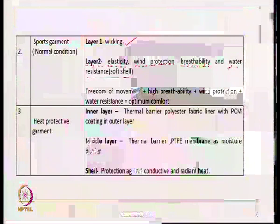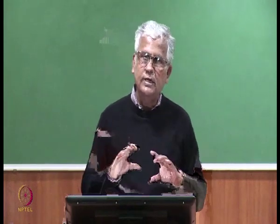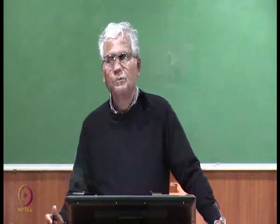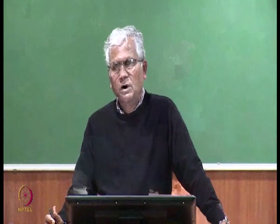Elasticity will give the person freedom to move their limbs very fast in different angles because when somebody is playing, the body is bending, twisting, and taking different configurations while running. Therefore, elasticity of the garment becomes more important for layer 2. In sports garments with high activity, this is very important. Freedom of movement, high breathability, and wind protection all give optimum comfort, because comfort becomes a function of freedom of movement, breathability, protection from cold wind, and resistance from raindrops.